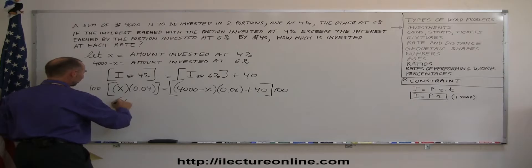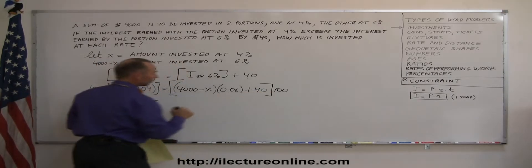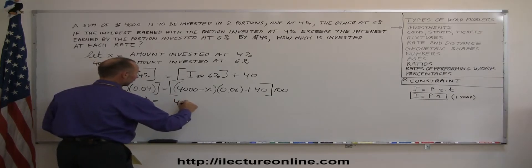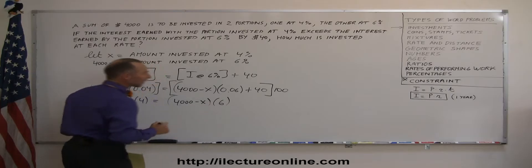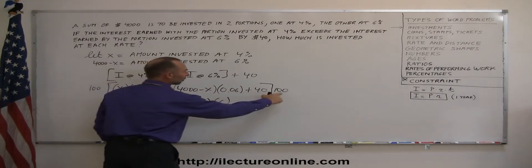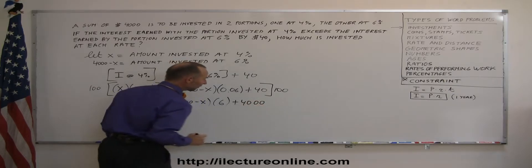100 times 0.04 is 4, so this is x times 4, equals 100 times 0.06 is 6, so this becomes 4,000 minus x times 6. And, of course, 100 times 40 is 4 with two more zeros, so that becomes now 4,000.